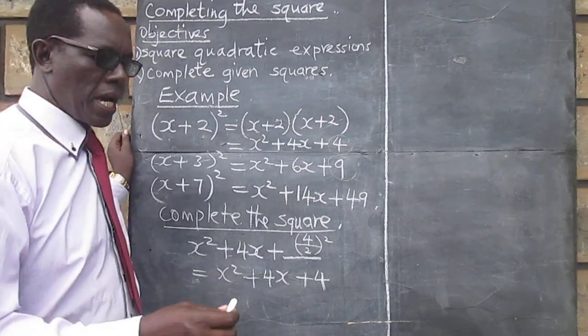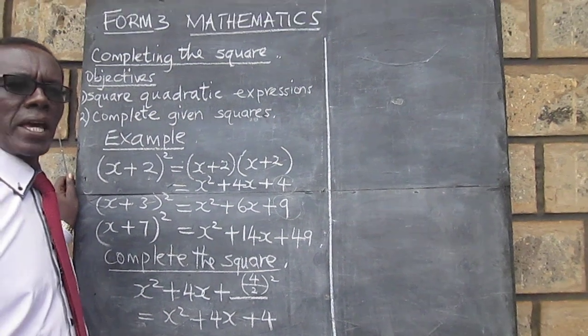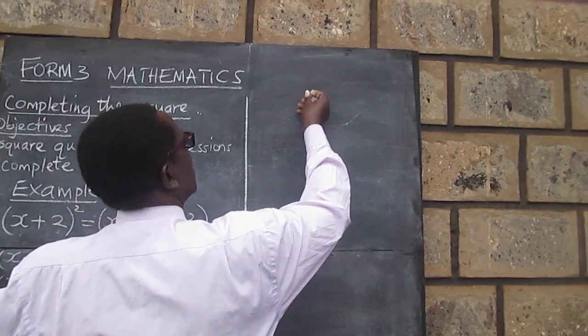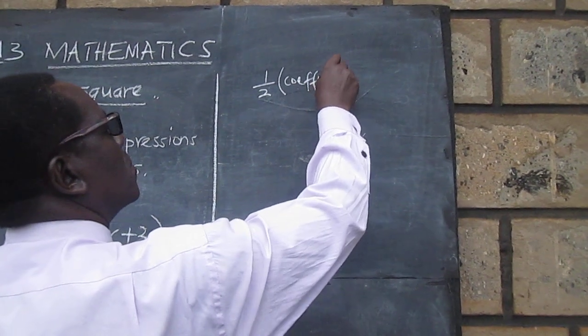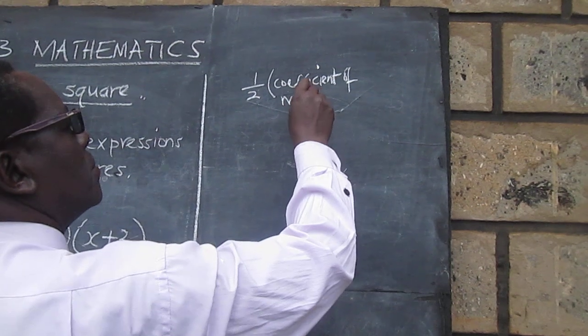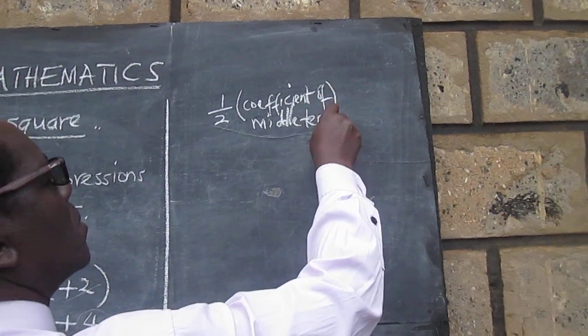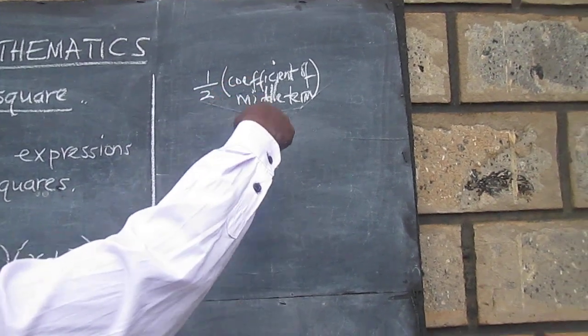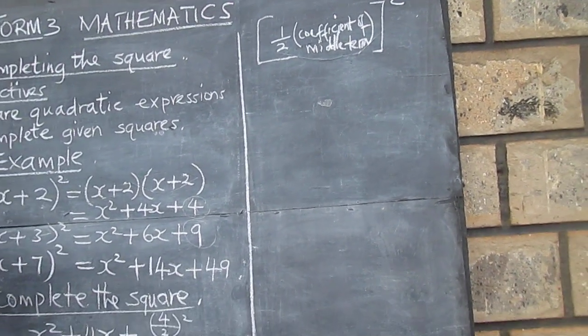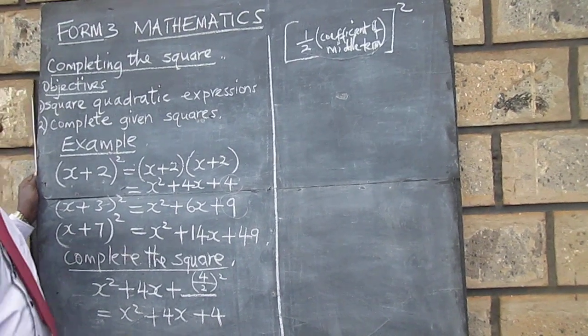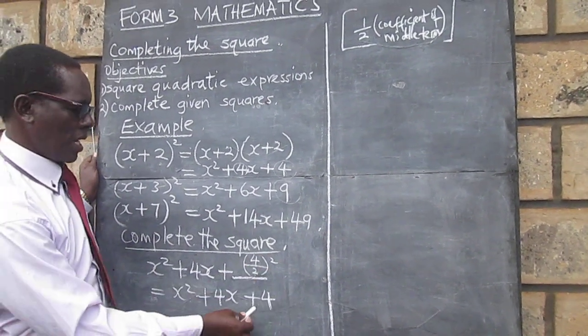I want to repeat that, that we will be adding a half of the coefficient of the middle term squared. A half of the coefficient of the middle term, all that squared. And that's why we said the coefficient of the middle term in this case is 4. We got a half of it and we squared it and it gives us 4.